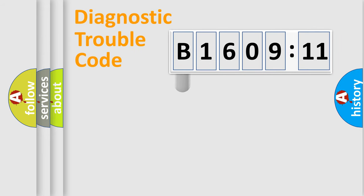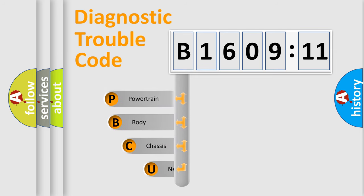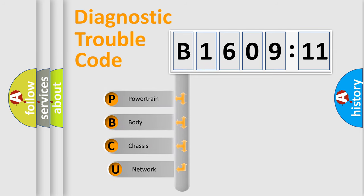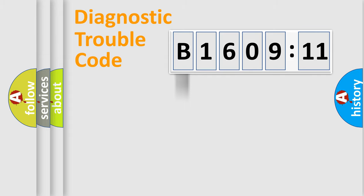First, let's look at the history of diagnostic fault code composition according to the OBD2 protocol, which is unified for all automakers since 2000. We divide the electrical system of an automobile into four basic units: Powertrain, Body, Chassis, and Network.